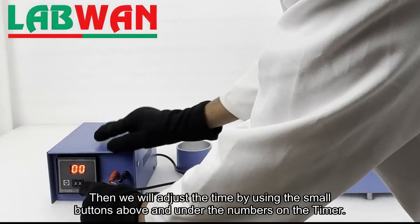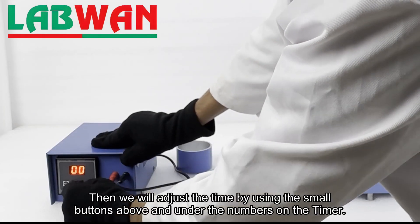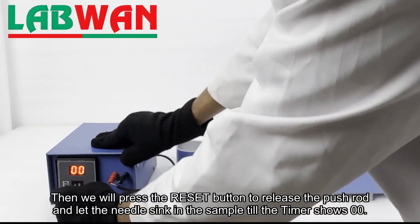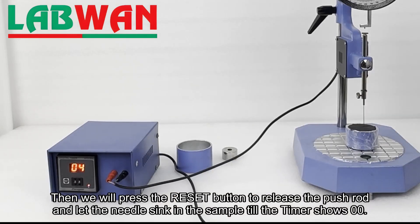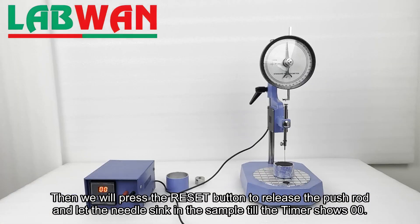We will adjust the time by using the small buttons above and under the numbers on the timer. Then we will press the reset button to release the push rod and let the needle sink in the sample until the timer shows double zero.